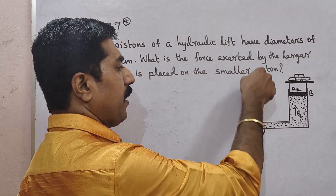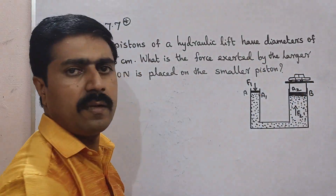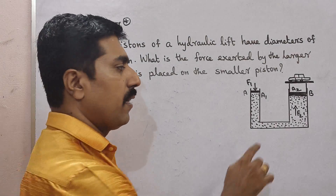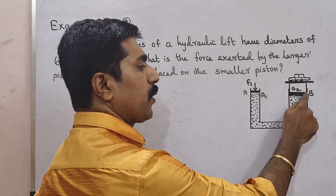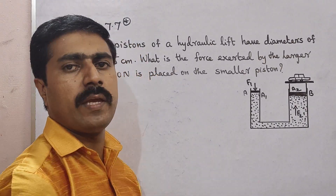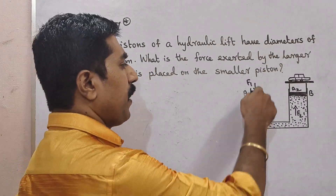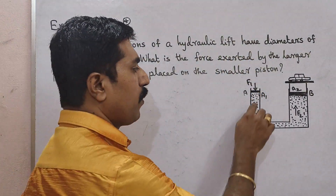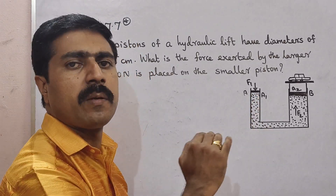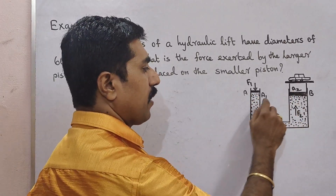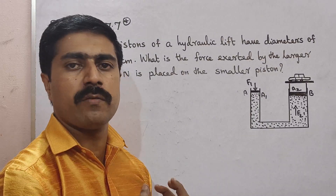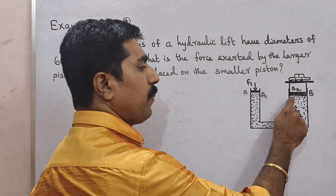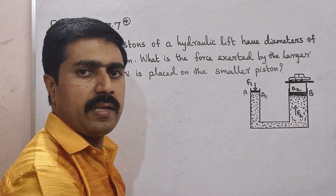Here are two pistons. If you look at this cylindrical pipe, the area of cross section is A1. In the other cylindrical pipe, the area of cross section is A2. Now if you look at the force F1, the minimum force creates pressure on the particles. Looking at the other side, you feel the pressure transmitted, and the number of particles acting on A2 is greater.